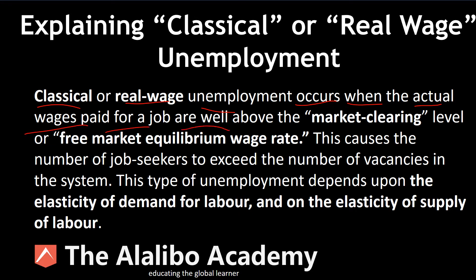The market clearing level is the normal rate, or the free market equilibrium wage rate. So when wages paid are well above the normal rate that is usually paid for these jobs, classical unemployment can occur.